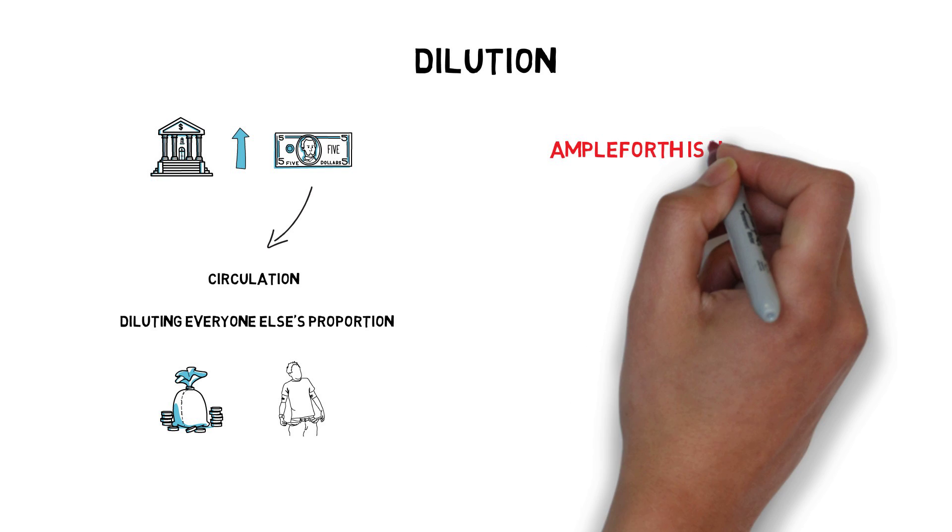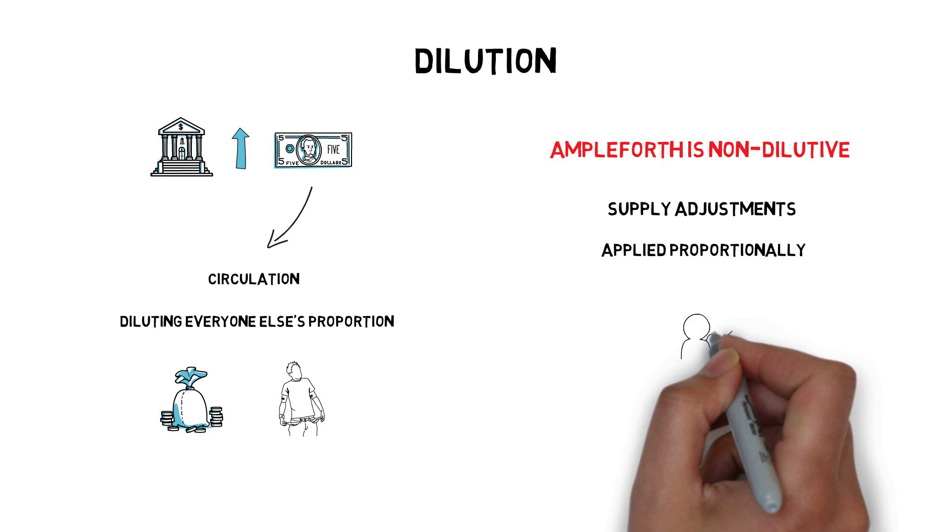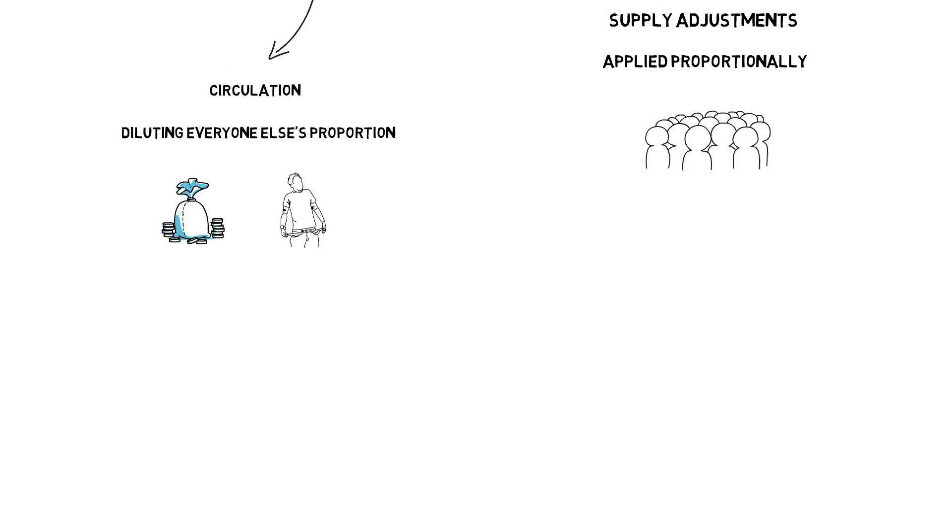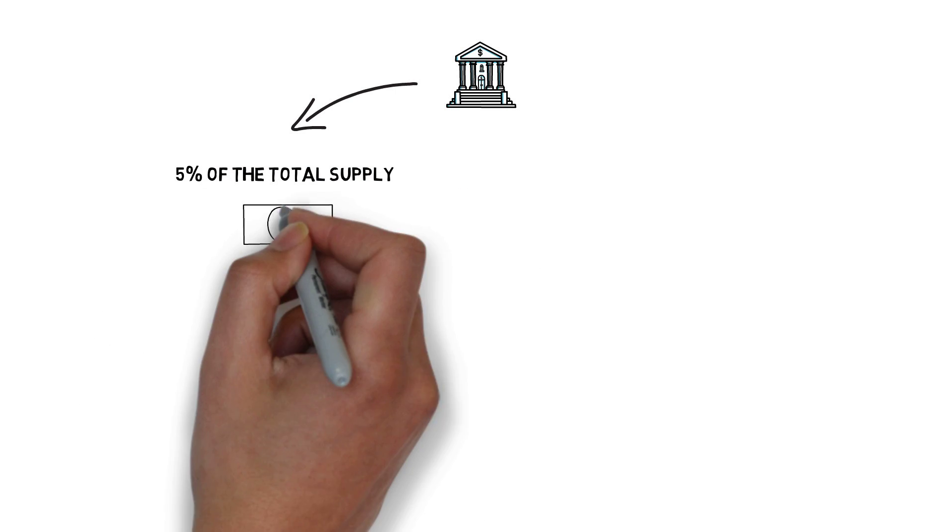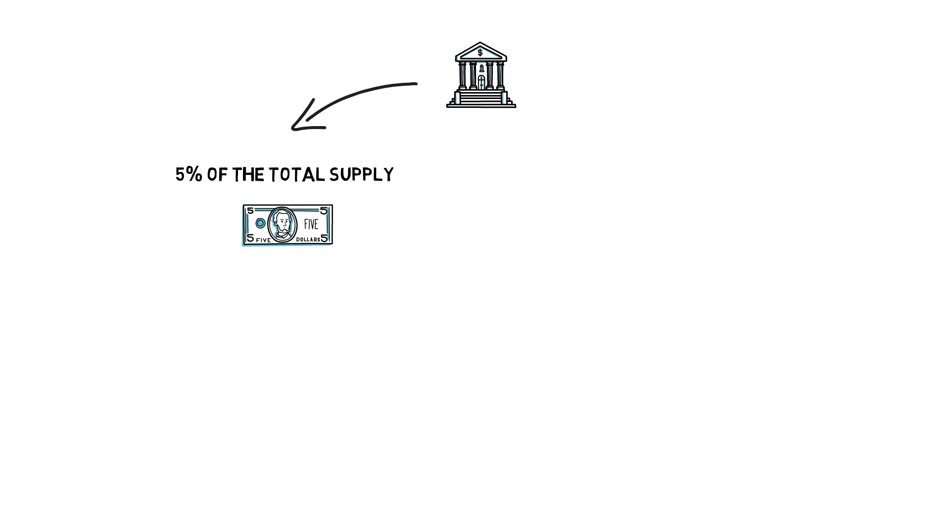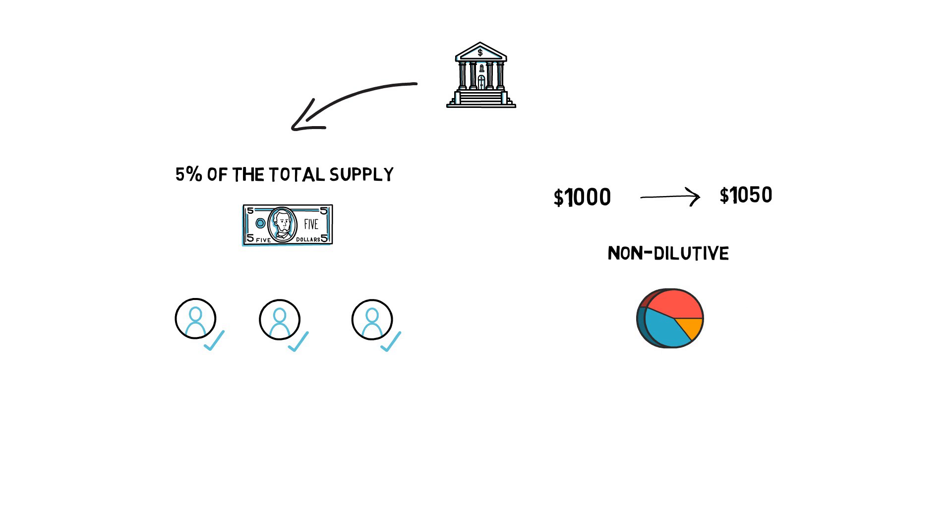Ampleforth is non-dilutive. This is achieved by applying supply adjustments proportionally across everyone's balances. Imagine the following situation. Let's say the Fed prints an extra 5% of the total supply of US dollars to meet an increase in demand. This extra 5% would be proportionally distributed across all accounts holding USD. So if you had $1,000 in your bank account, after the supply change you would end up with $1,050. That scenario would make the US dollar non-dilutive, as your proportion of the overall supply of dollars would remain the same after the adjustment.